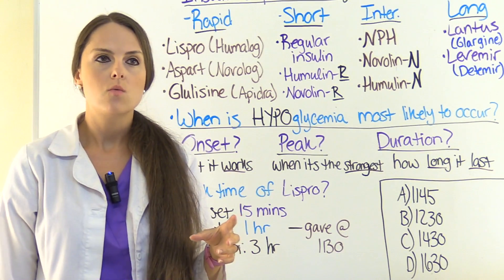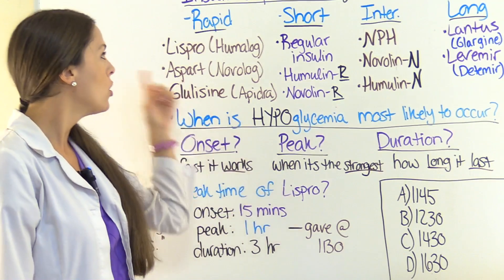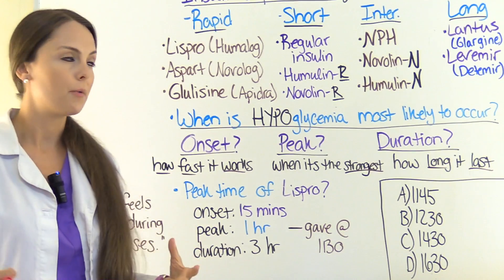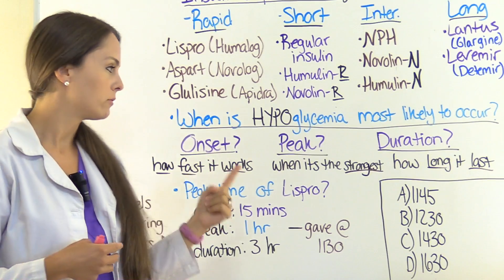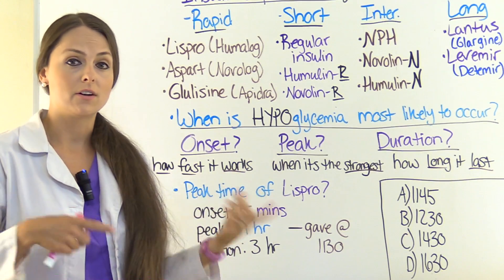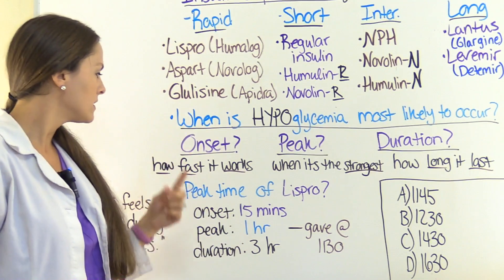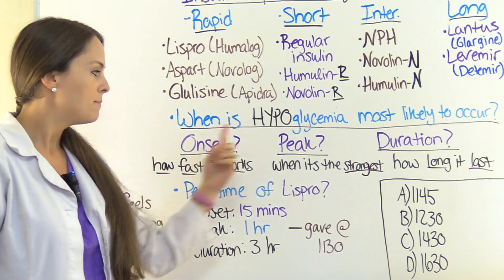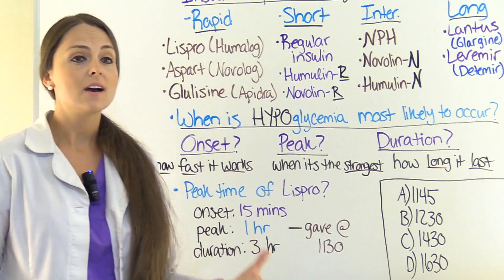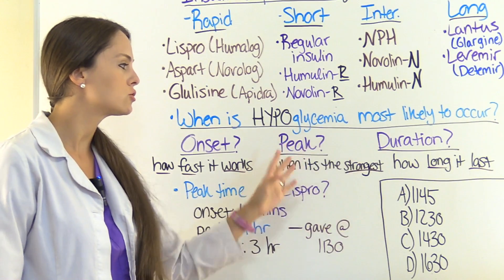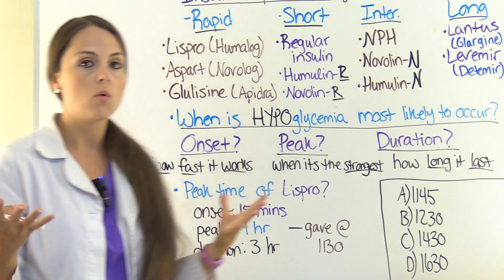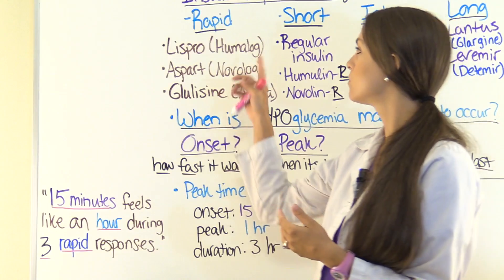Our question wants to know when hypoglycemia is most likely to occur with this rapid insulin, Lispro. Hypoglycemia is whenever the blood sugar drops low. For each insulin we need to remember three things: onset, peak, and duration. So you need to ask yourself: when will hypoglycemia occur — during the onset, during the peak, or during the duration? Onset is how fast the insulin is going to work. Peak is when it's the strongest, having the strongest effect on the body. Duration is how long that insulin is going to last. The patient is most at risk for their blood sugar dropping during the peak — when it has the strongest ability to bring blood sugar down. So we need to know the peak of this Lispro rapid-acting insulin.